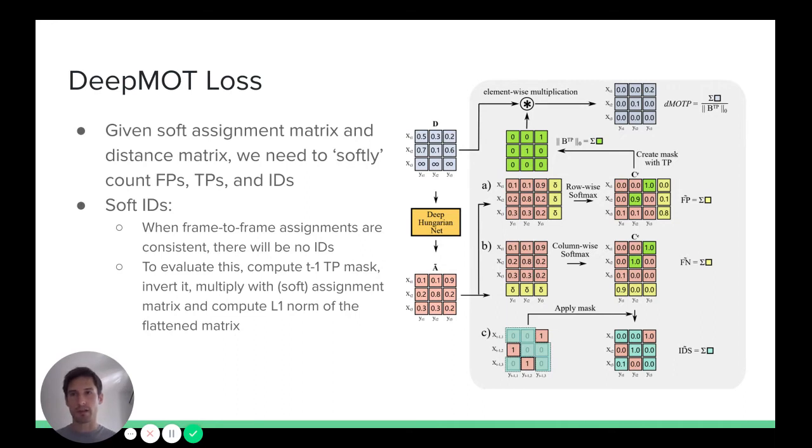To count false positives in a differentiable way, what we can do is we can append a column to the soft assignment matrix that is filled with some base threshold value. Then, we can compute row-wise softmax. If, after computing softmax, entry in the extra column will be close to 1, this is signaling that we likely have a false positive. Otherwise, the element with the largest value in each row will be close to 1, signaling that we have a match. And this now means that by summing over appended column will give us soft estimates of number of false positives.